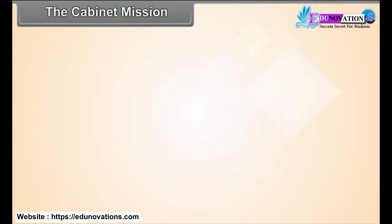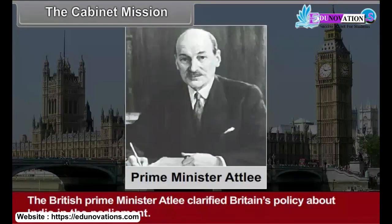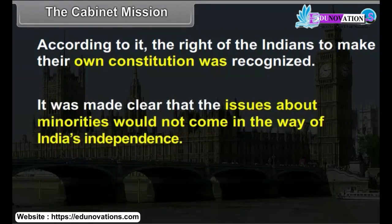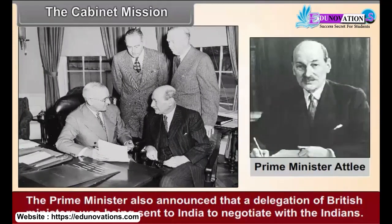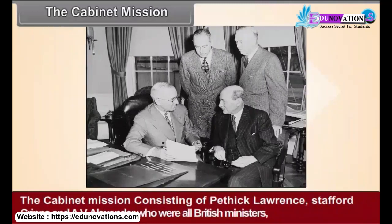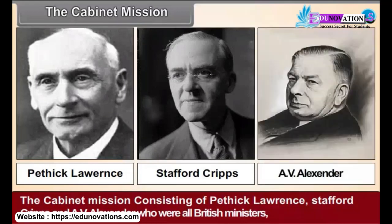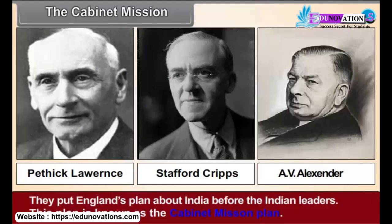The Cabinet Mission: After the end of the Second World War, the British rulers became favourable to giving independence to India. The British Prime Minister clarified Britain's policy about India in Parliament. According to it, the right of the Indians to make their own constitution was recognised. It was made clear that the issues about minorities would not come in the way of India's independence. The Prime Minister also announced that a delegation of British ministers was being sent to India to negotiate with the Indians. The Cabinet Mission, consisting of Pethick Lawrence, Stafford Cripps, and A.V. Alexander, who were all British ministers, arrived in India in March 1946.